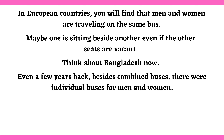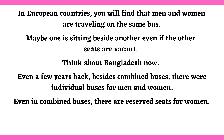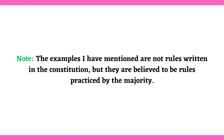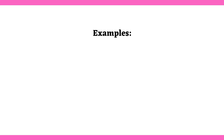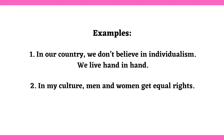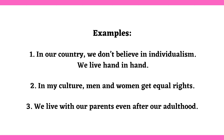In European countries, you will find that men and women are traveling on the same bus — maybe one is sitting beside another even if the other seats are vacant. Think about Bangladesh: even a few years back, besides combined buses, there were individual buses for men and women. Even in combined buses, there are reserved seats for women, and a woman in Bangladesh usually doesn't sit next to a man. Note: the examples mentioned are not rules written in the constitution, but they are believed to be rules practiced by the majority. Examples: In our country, we don't believe in individualism — we live hand in hand. In my culture, men and women get equal rights. We live with our parents even after our adulthood.